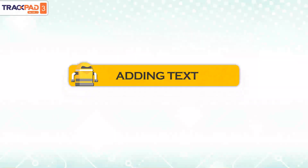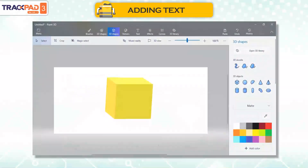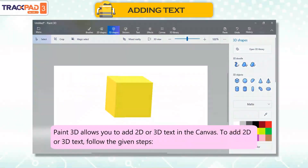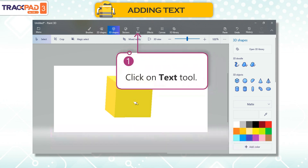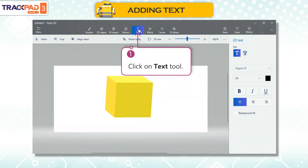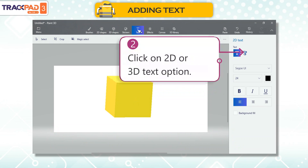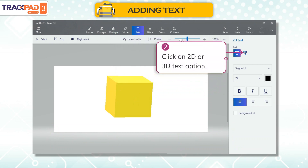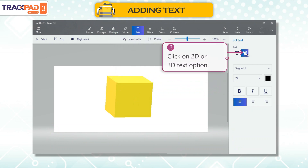Adding Text. Paint 3D allows you to add 2D or 3D text in the canvas. To add 2D or 3D text, follow the given steps. First, click on Text Tool. Second, click on 2D or 3D text option.